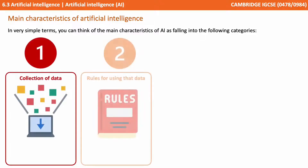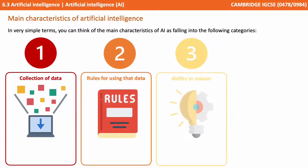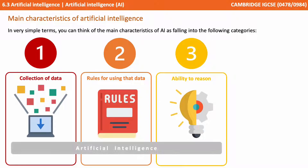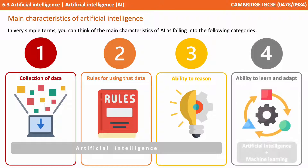In very simple terms you can think of the main characteristics of AI as falling into three to four categories. All AI involves the collection of data, rules for using that data, and the ability to reason. If we add into this the ability to learn and adapt, we have AI including machine learning.